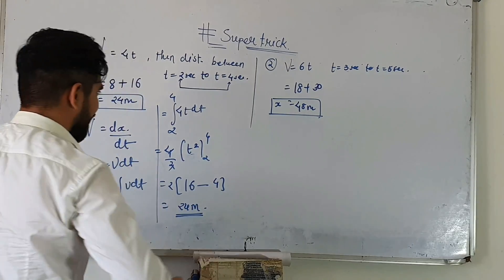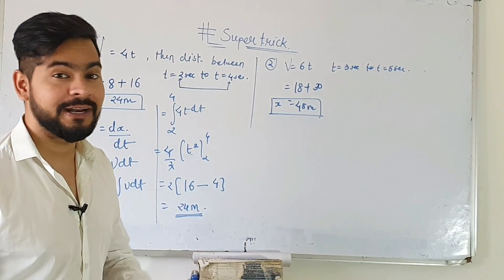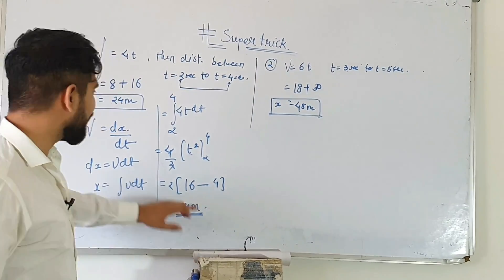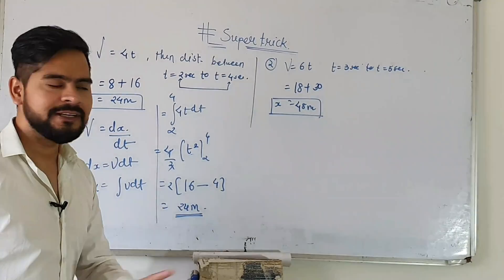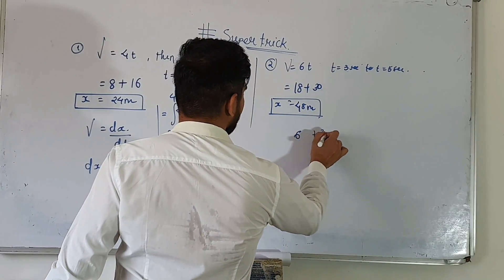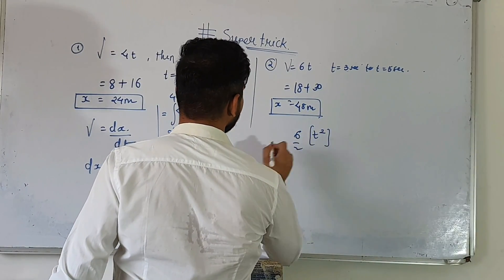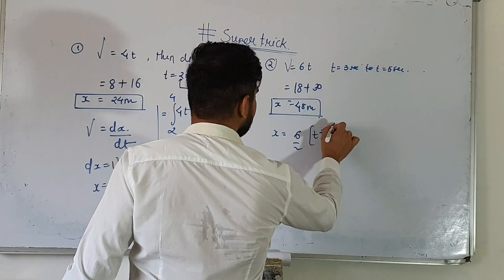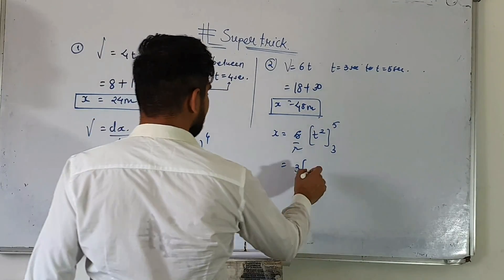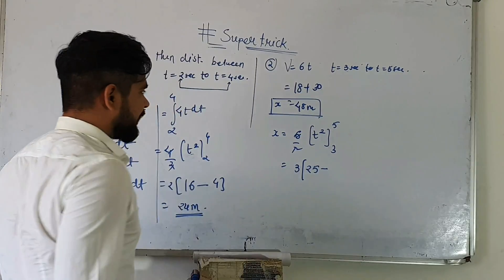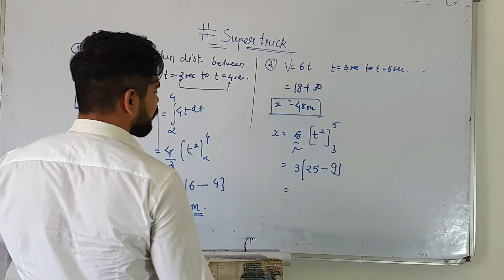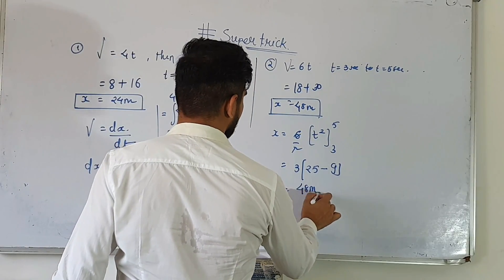24 meters. Now the choice is yours — do you want to do it this way, or take a quick answer with the trick? So we apply here: the answer is the integral of 6t², which gives 6t² by 2 — done directly. Then with limits from 3 to 5: when t=5, this gives 25 × 3 = 75; and when t=3, this gives 9 × 3 = 27. So the answer is 45 meters.